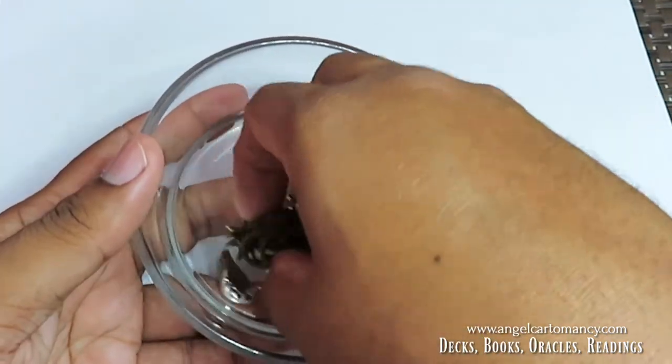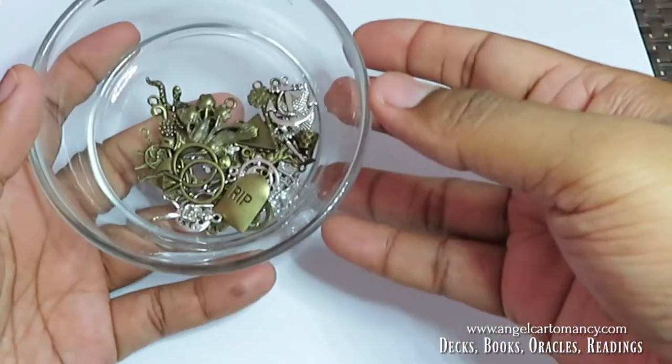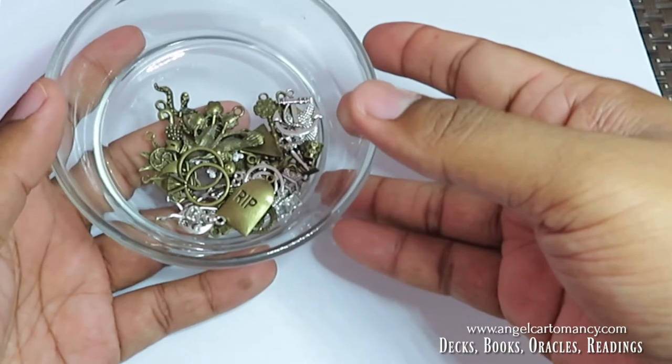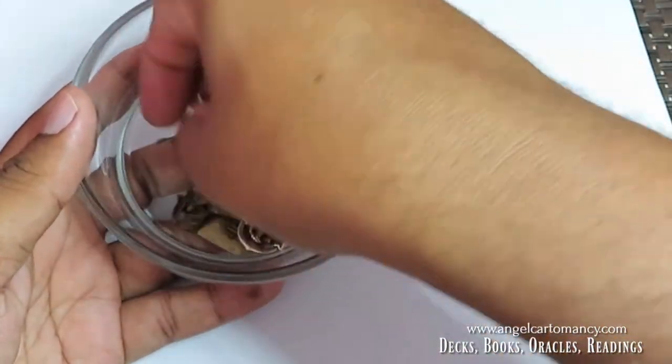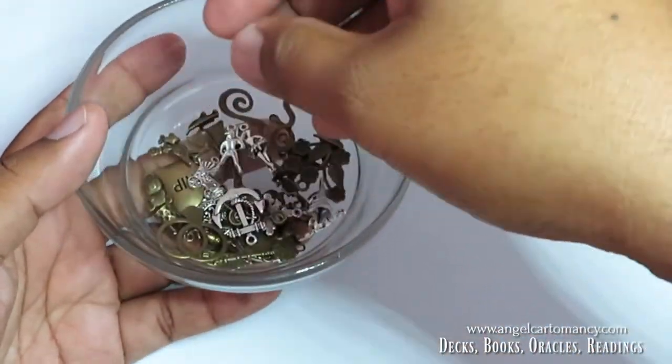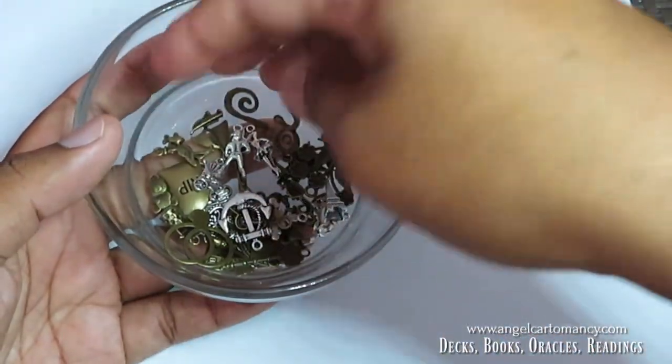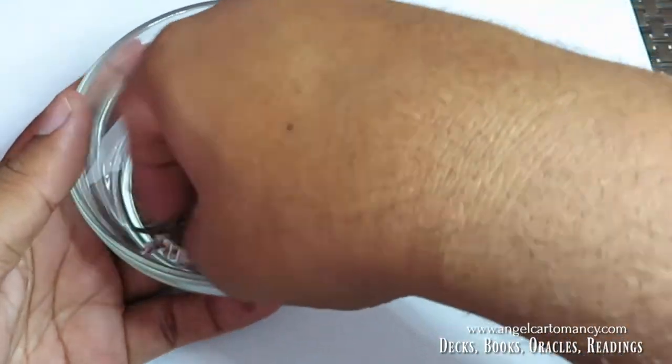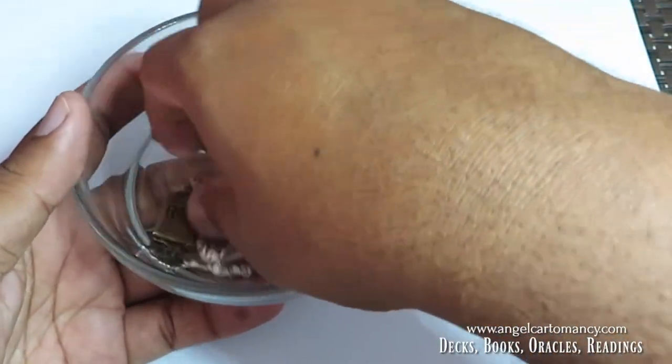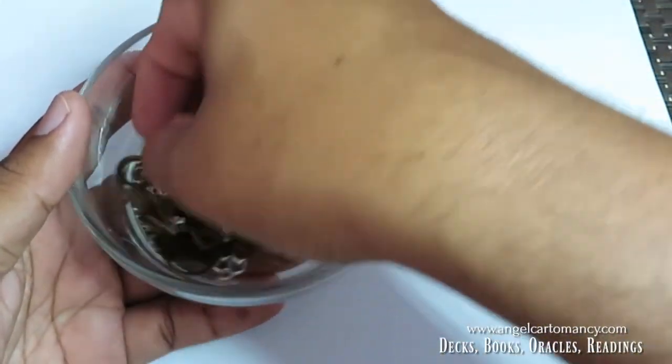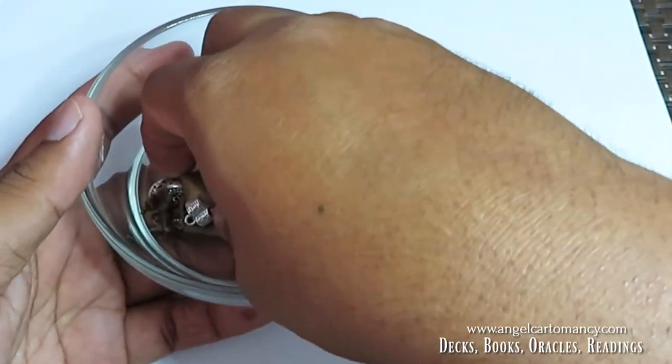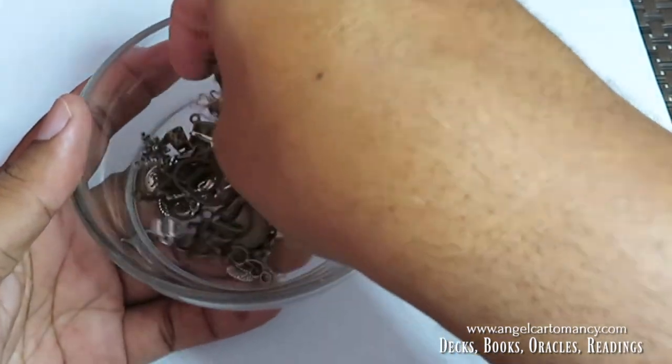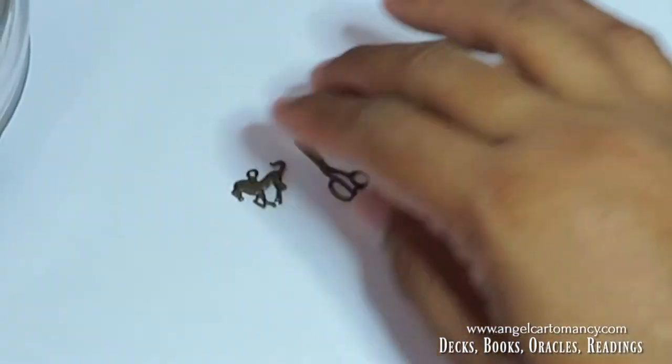So you have these charms and the way that you will use them, you will just throw them in a reading, sprinkle them. And I like to use a bowl. Some people use a stick or a bag, but I like a bowl that you can put your hand in there and turn it. So I think about my question and I just take a little sprinkle. Let's say, what will be my day today? Little sprinkle.